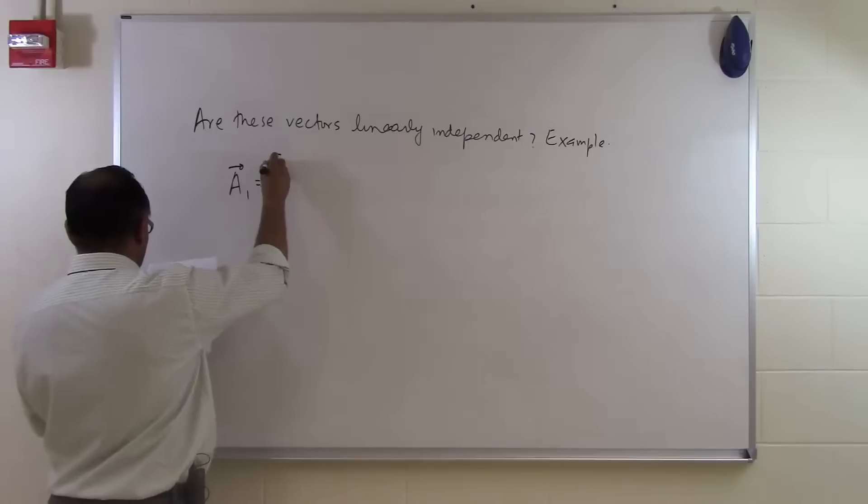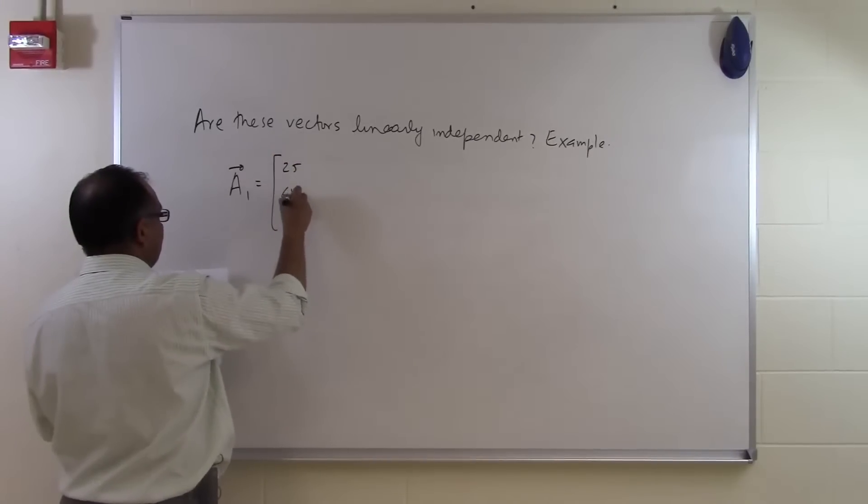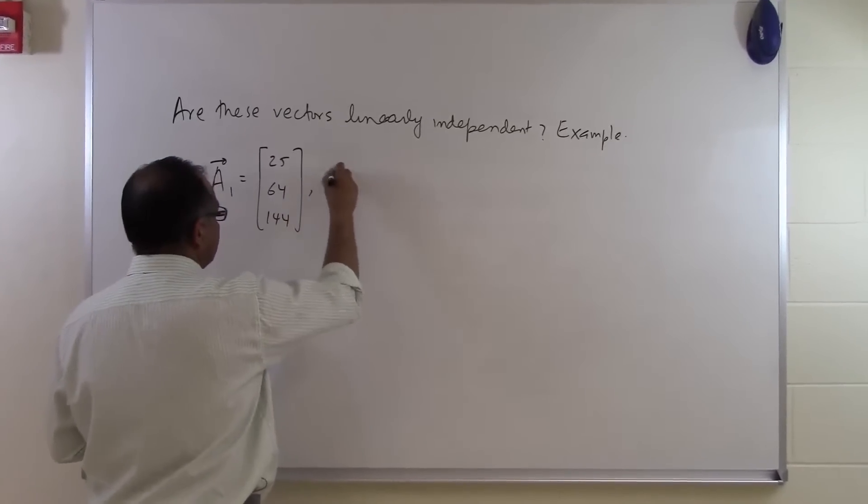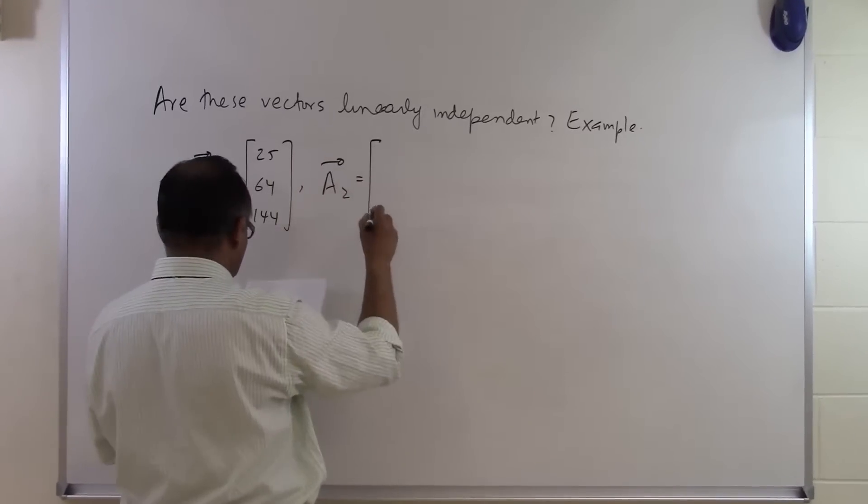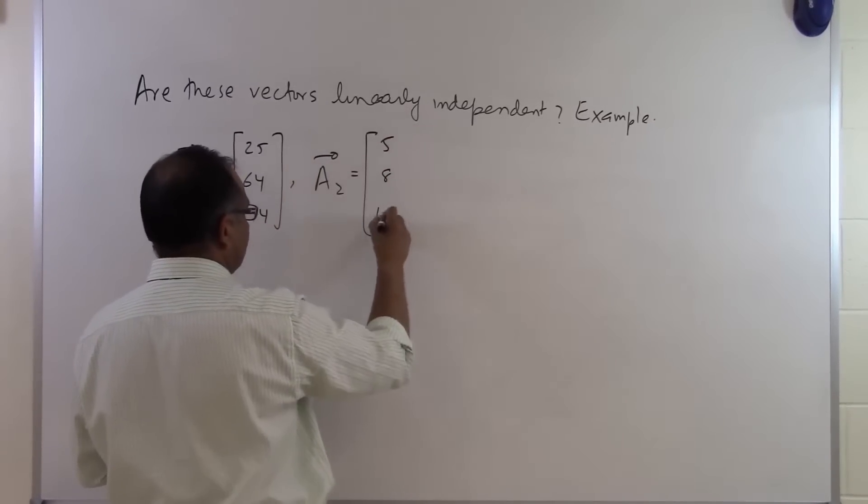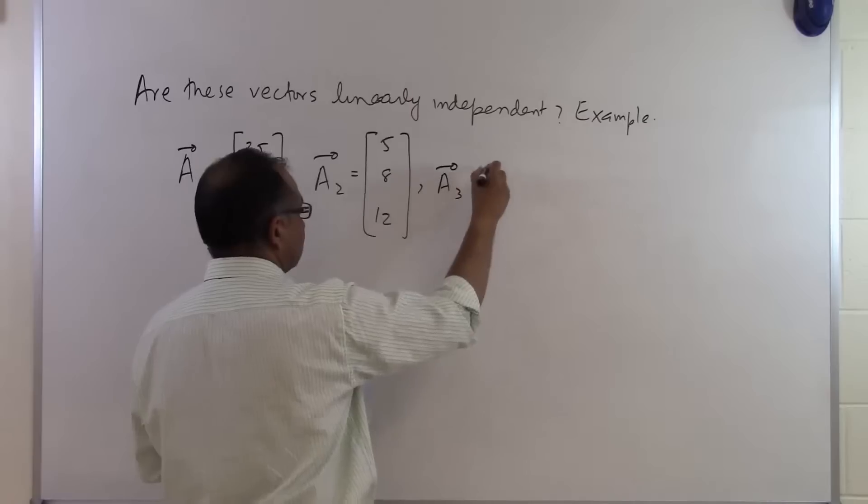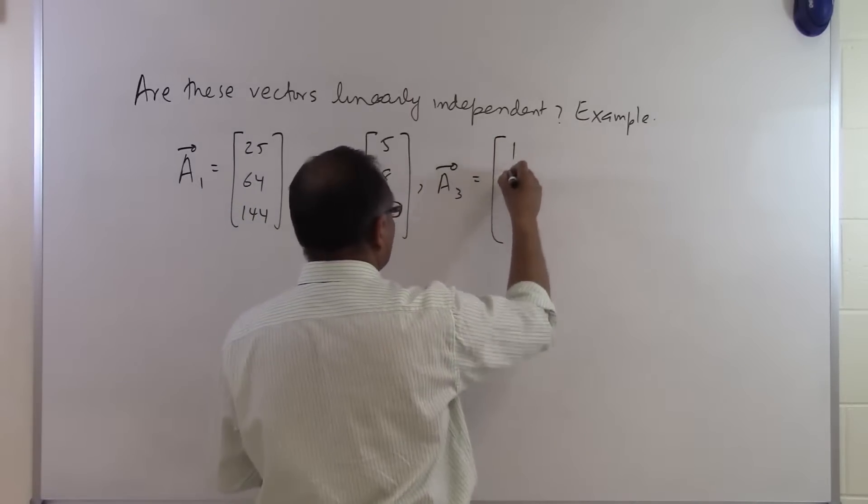A1 equal to 25, 64, 144. That's my first vector. And the second vector is given to you as 5, 8, and 12. And the third vector is given to you as 1, 1, 1.